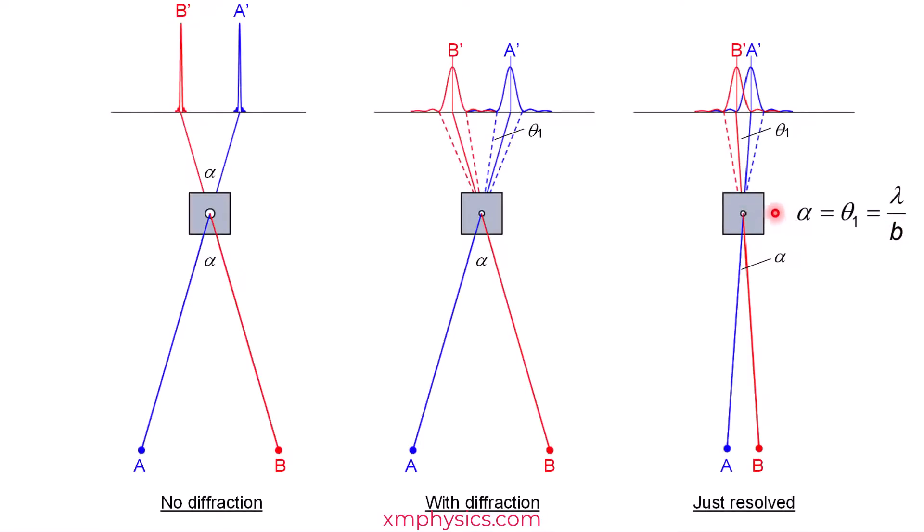So Rayleigh's criteria basically says that two images are resolved when the angular separation alpha equals the first minimum angle. If you are talking about stars, we have no say over alpha. I mean, you cannot ask the stars to move further away from each other.